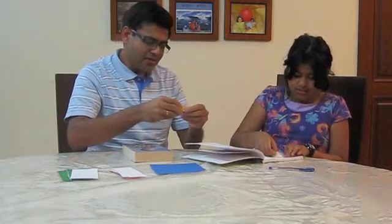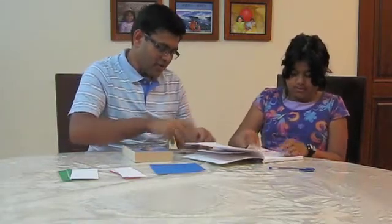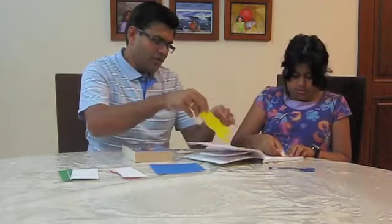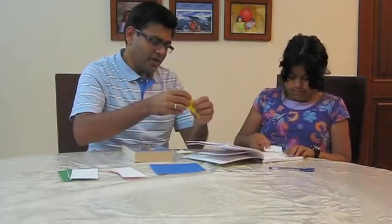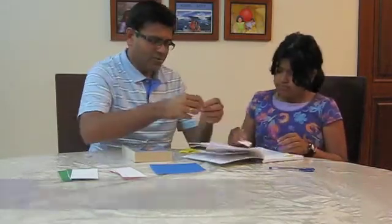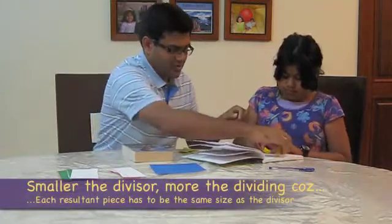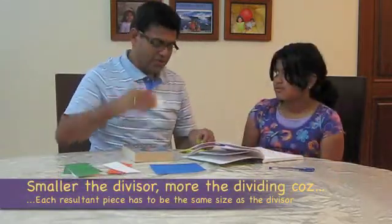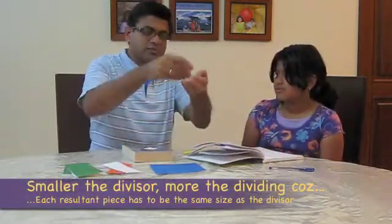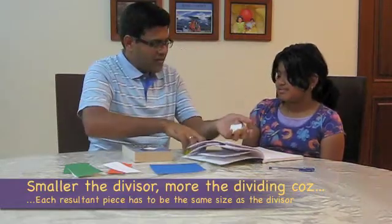So, you can see, as the divisor becomes smaller and smaller, you have to divide many more times, right? Yeah. Okay. Now, I'll give you a smaller divisor. And with the smaller divisor, you got a bigger answer. Correct?